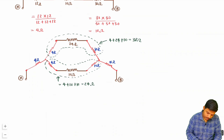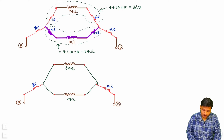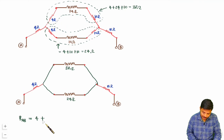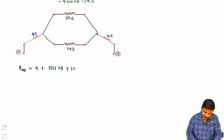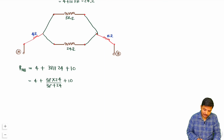Let us simplify further. This resistance is 38 ohm and this resistance is 24 ohm. To calculate RAB, there is a 4 ohm resistor in series, then 38 ohm in parallel with 24 ohm, and that combination is in series with 10 ohm. So RAB equals 4 plus 38 parallel with 24, plus 10. That is 4 plus 38 into 24 divided by 38 plus 24, plus 10.